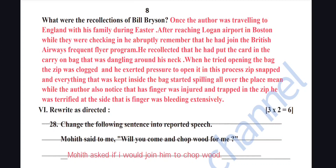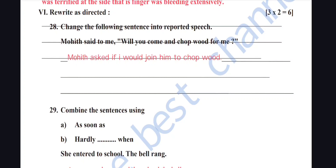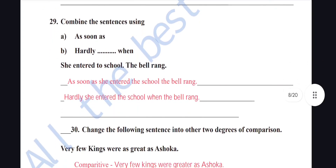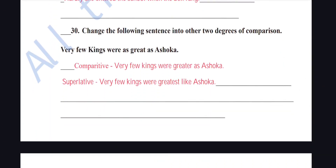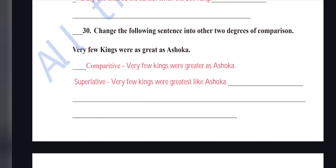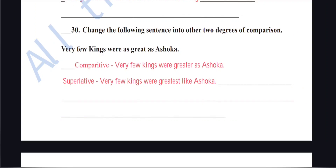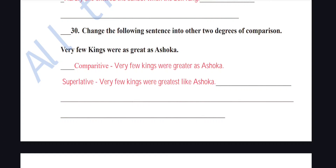Rewrite as directed: Change to reported speech — 'Mohit said to me, will you come and chop wood for me?' Answer: 'Mohit asked if I would join him to chop wood.' Combine using 'as soon as': 'As soon as she entered the school, the bell rang.' Using 'hardly...when': 'Hardly had she entered the school when the bell rang.' Degrees of comparison of Ashoka: 'Very few kings were as great as Ashoka / Ashoka was greater than most other kings / Ashoka was one of the greatest kings.'